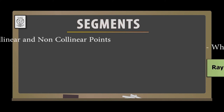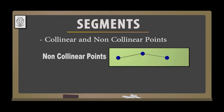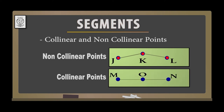Then we have the concept of non-collinear and collinear points. Consider points J, K, and L. These three points are non-collinear because they are not in a straight line. Whereas the points M, O, and N are in a straight line, so they are called collinear points. When three points lie in a straight line, they are called collinear points, and if they do not lie in a straight line, they are called non-collinear points.